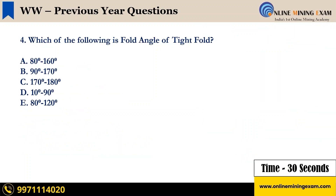Which of the following is the fold angle of a tight fold? A: 80 degree to 160 degree, B: 90 degree to 170 degree, C: 170 degree to 180 degree, D: 10 degree to 90 degree, E: 80 degree to 120 degree. Your time starts now.